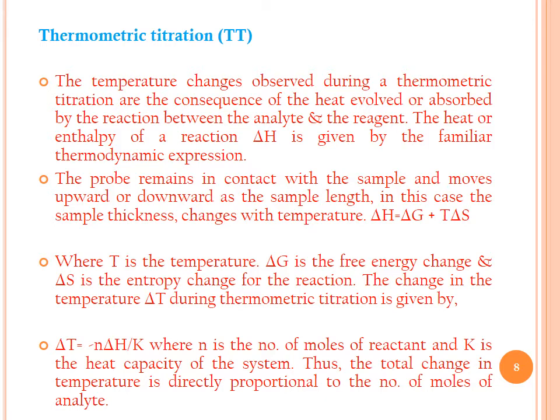The change in temperature ΔT during thermometric titration is given by: ΔT = −nΔH / k, where n is the number of moles of the reactant and k is the heat capacity of the system. In TT, the heat capacity—related to the enthalpy change—is determined from the reaction between titrant and titrand.